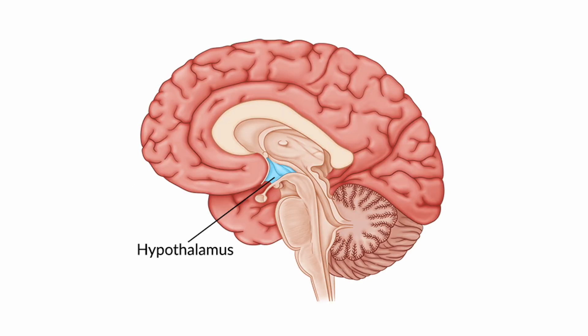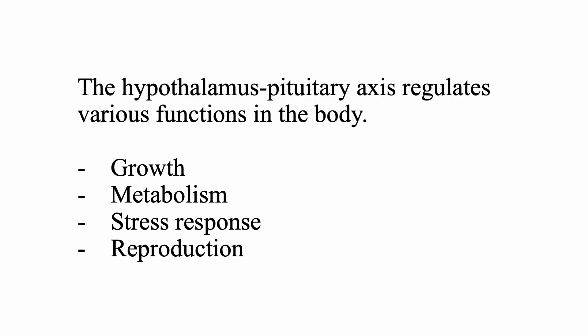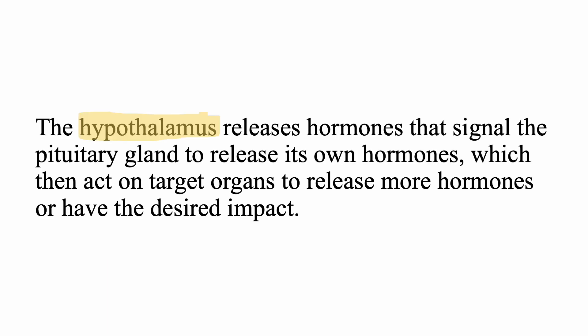Let's start with a brief overview of the hypothalamus pituitary axis. This system consists of two main components: the hypothalamus and the pituitary gland. The hypothalamus is a small region of the brain located just above the brain stem. The pituitary gland is a pea-sized gland located at the base of the brain. This axis regulates various functions in the body, including growth, metabolism, stress response, and reproduction. The hypothalamus releases hormones that signal the pituitary gland to release its own hormones, which can then act on target organs to release more hormones or have the desired impact on the relevant tissues.